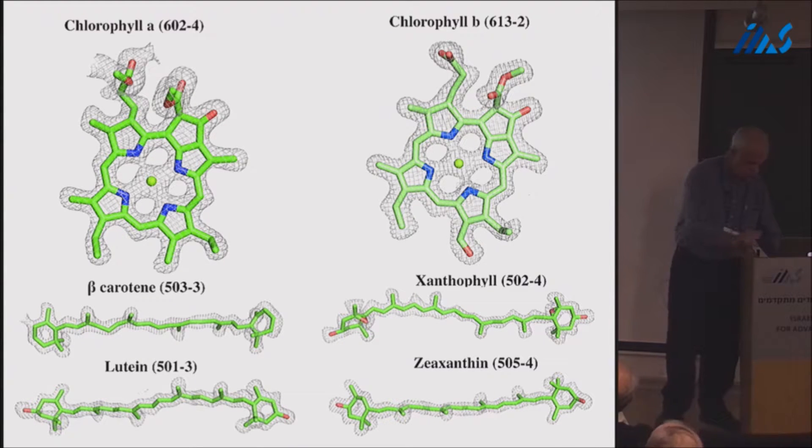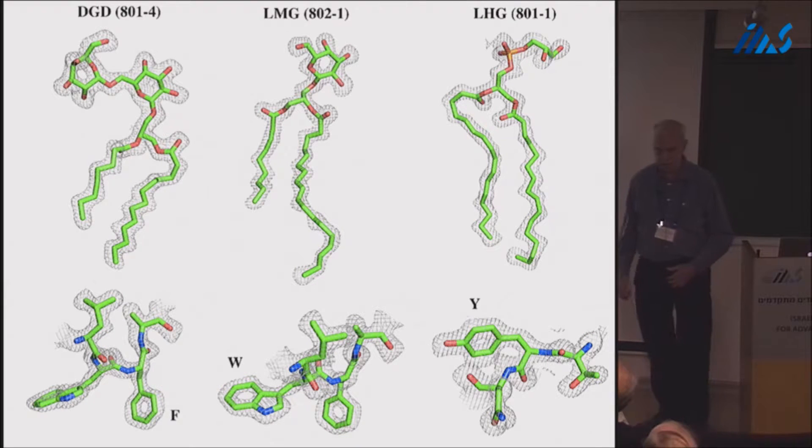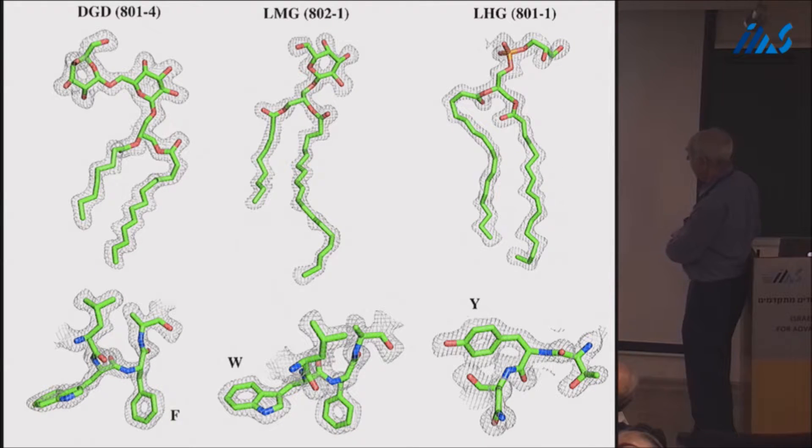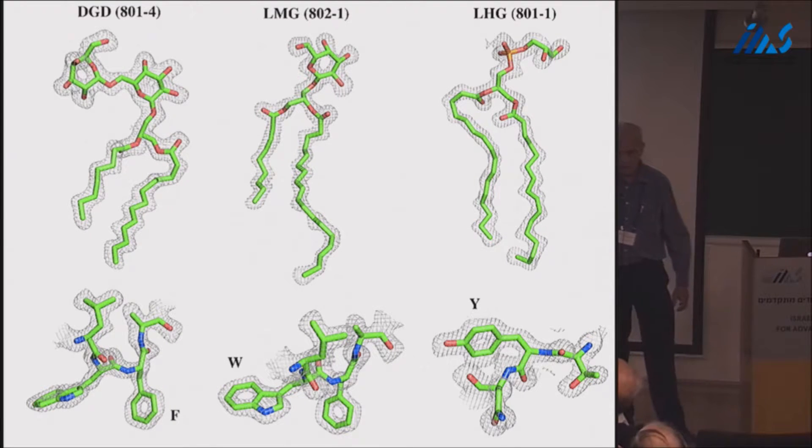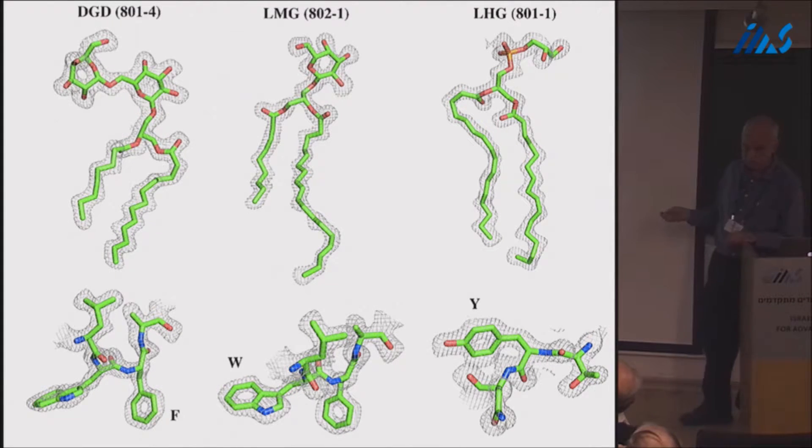Photosystem I contains four different carotenoids that have a lot of meaning in the protection against damage. And each one of them we can differentiate easily. They are completely different in the electron density and we can assign them. We have lipids, structural lipids in photosystem I. Phospholipid, glycolipid and digalactosyl. And you see that there is no doubt about the electron densities of this. The aromatic amino acid has holes. It's remarkable that fatty acid chains are so well constrained because they are structural.